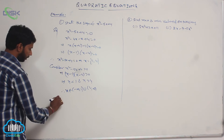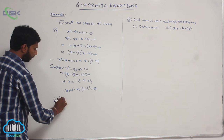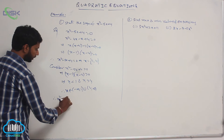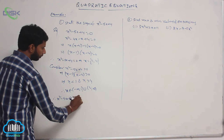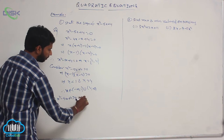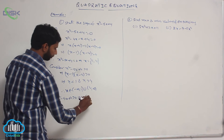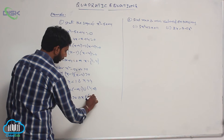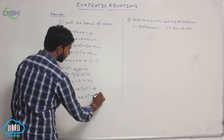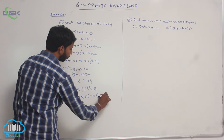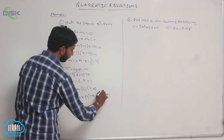Therefore, x² - 5x + 4 is positive when x belongs to (-∞, 1) ∪ (4, ∞).